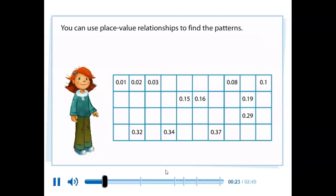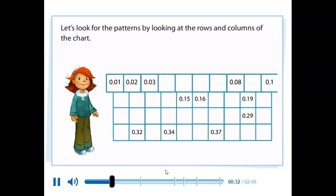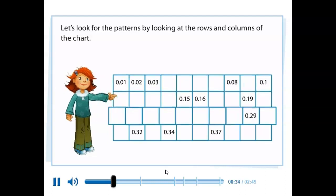You can use place value relationships to find the patterns. Let's look for the patterns by looking at the rows and columns of the chart.